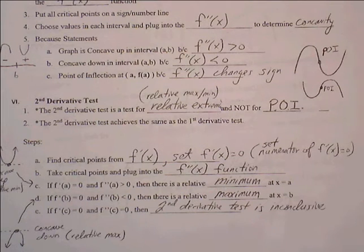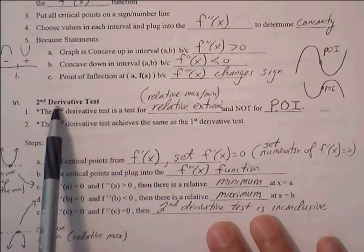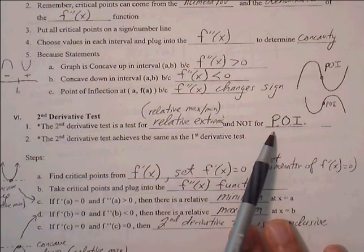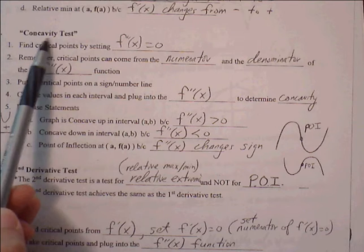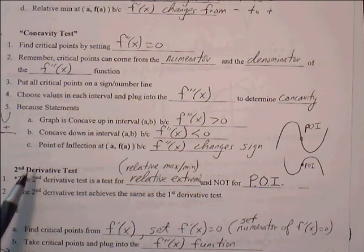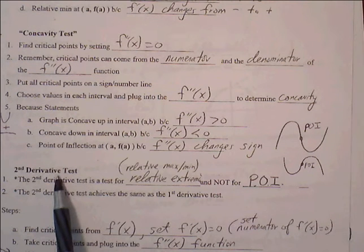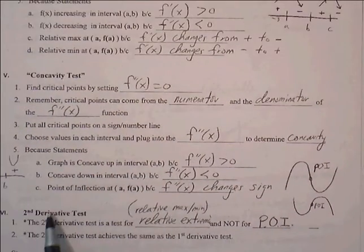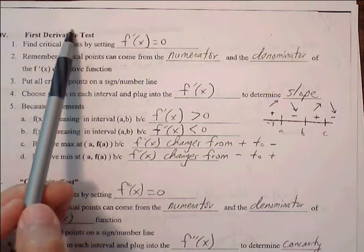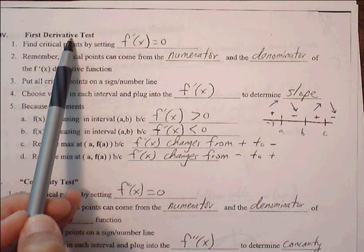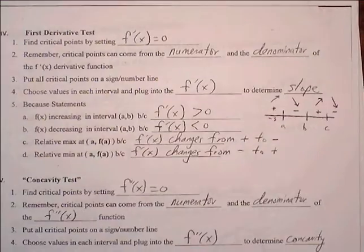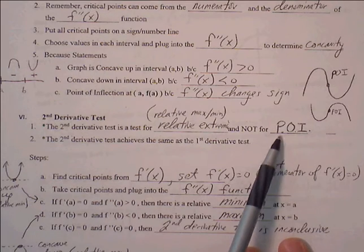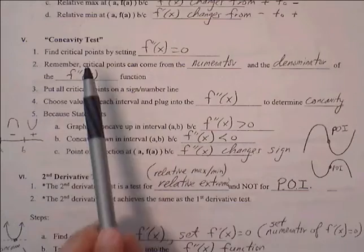One more concept is the second derivative test. We have to be careful with this name — the second derivative test is a test for relative max and relative min. It is not a test for POI; for POI I call it the concavity test. Both involve the second derivative function, but the second derivative test specifically refers to a second option of finding relative max and relative min. It essentially gives us the same result as the first derivative test — it allows us to identify relative max and relative min, just using a different method. It does not test for POI and does not do the same thing as the concavity test.